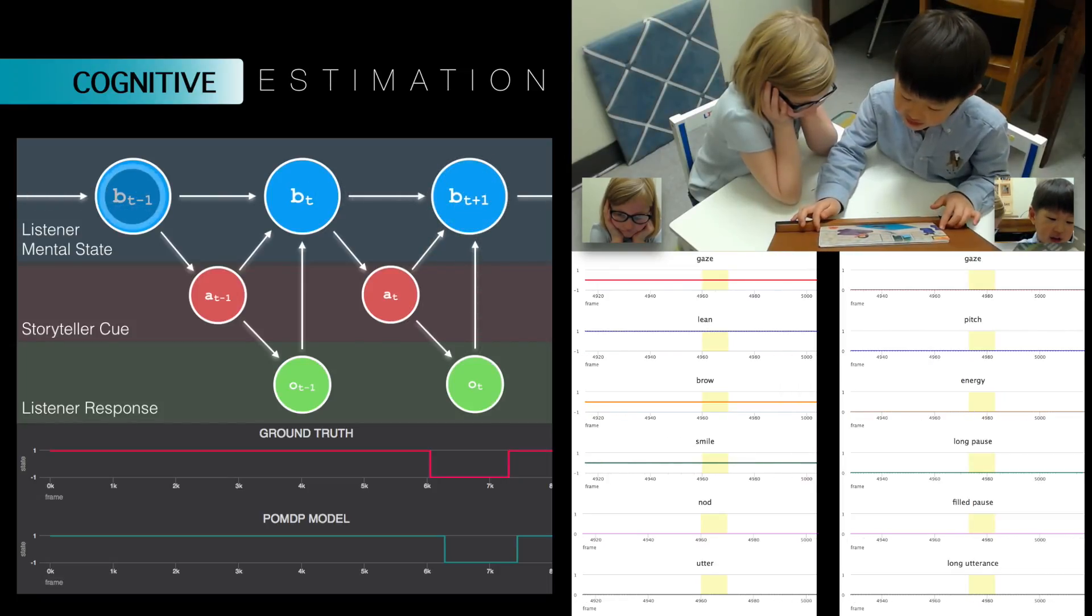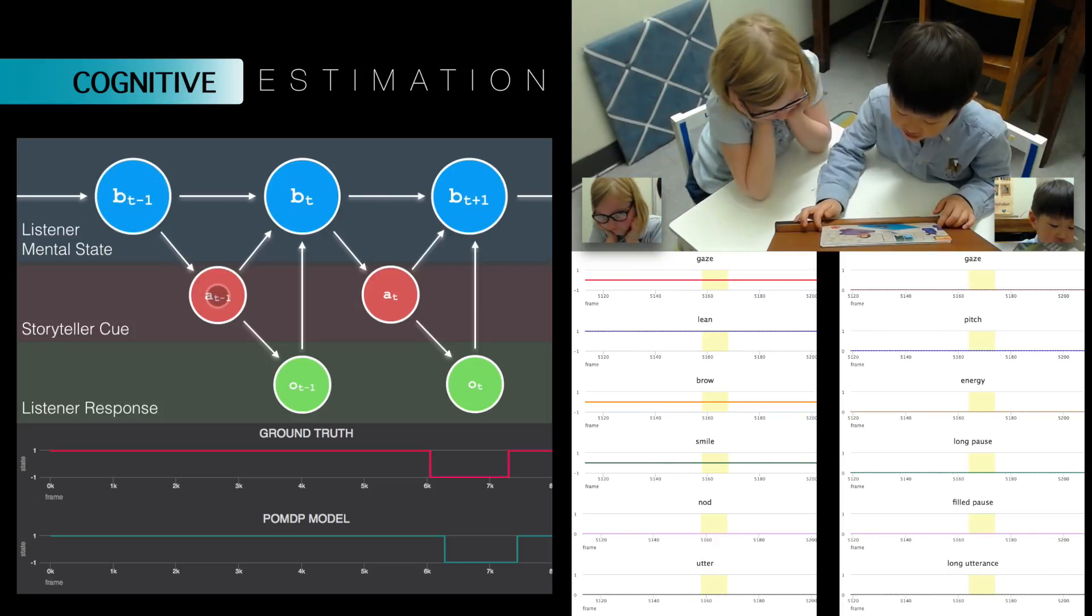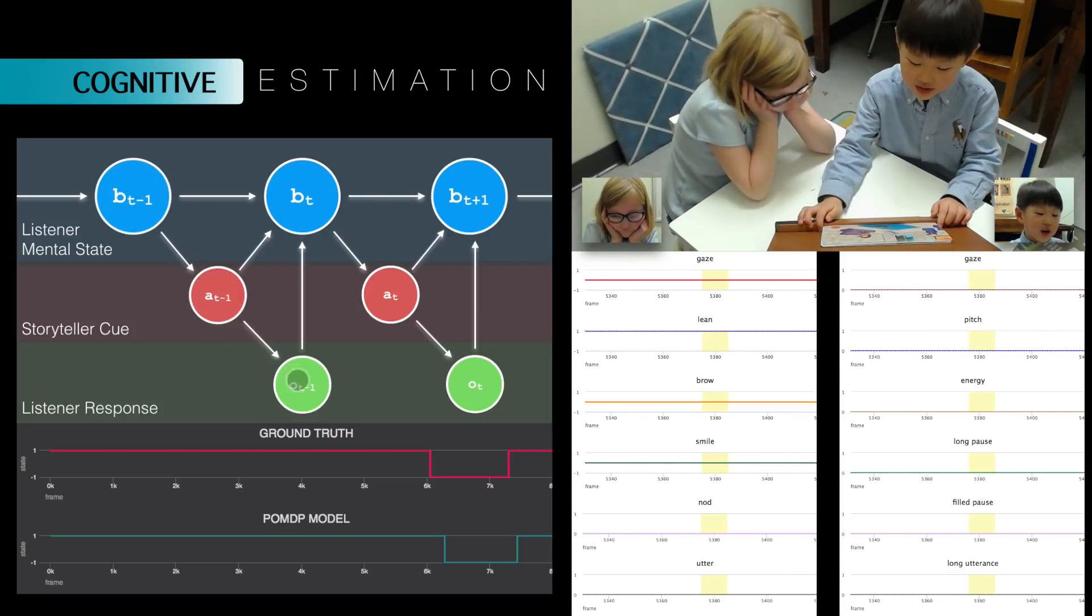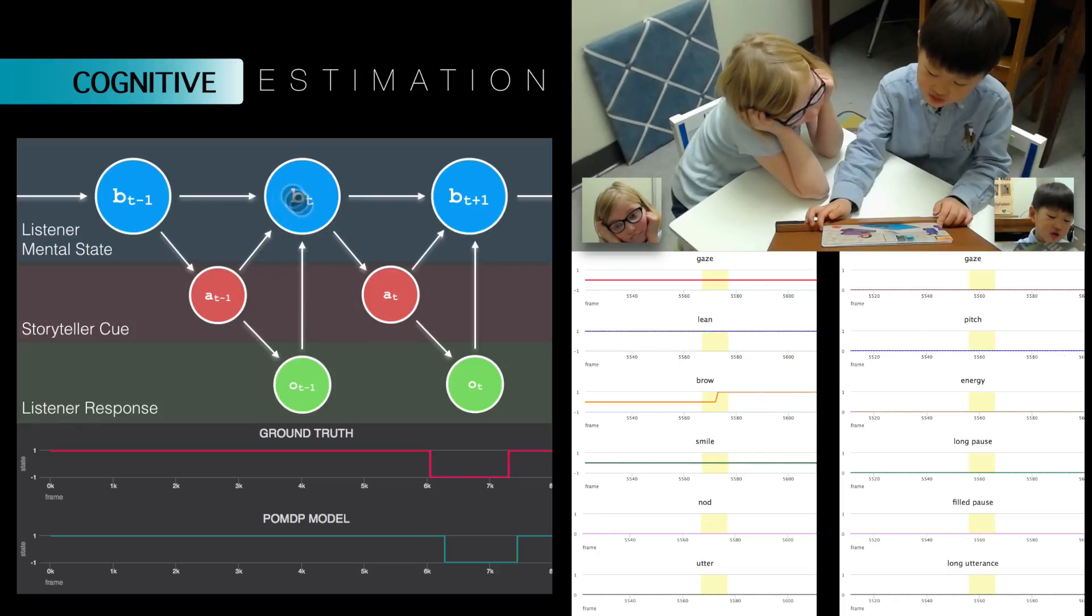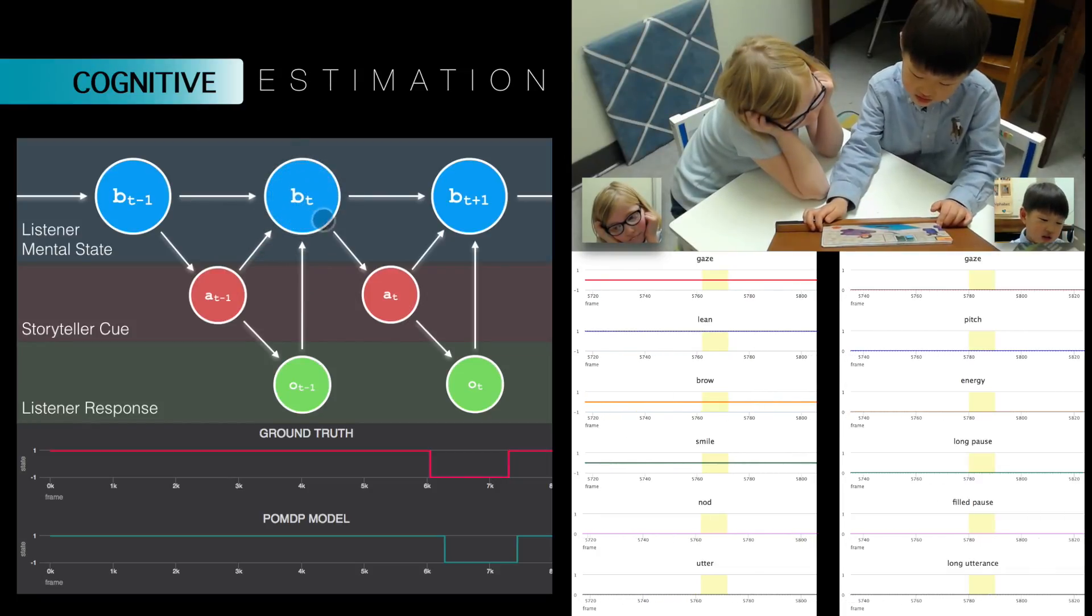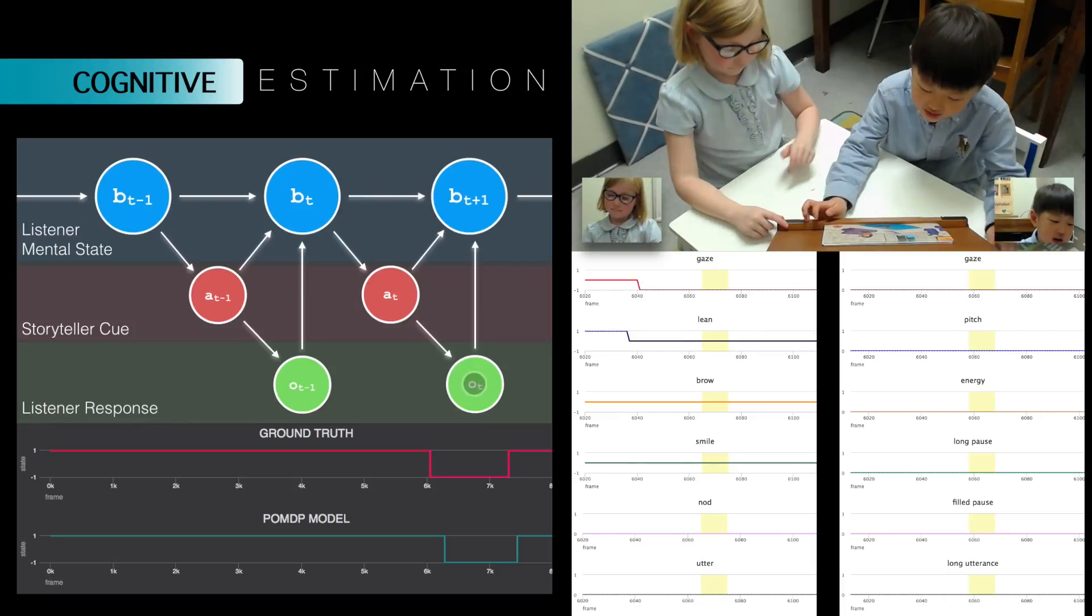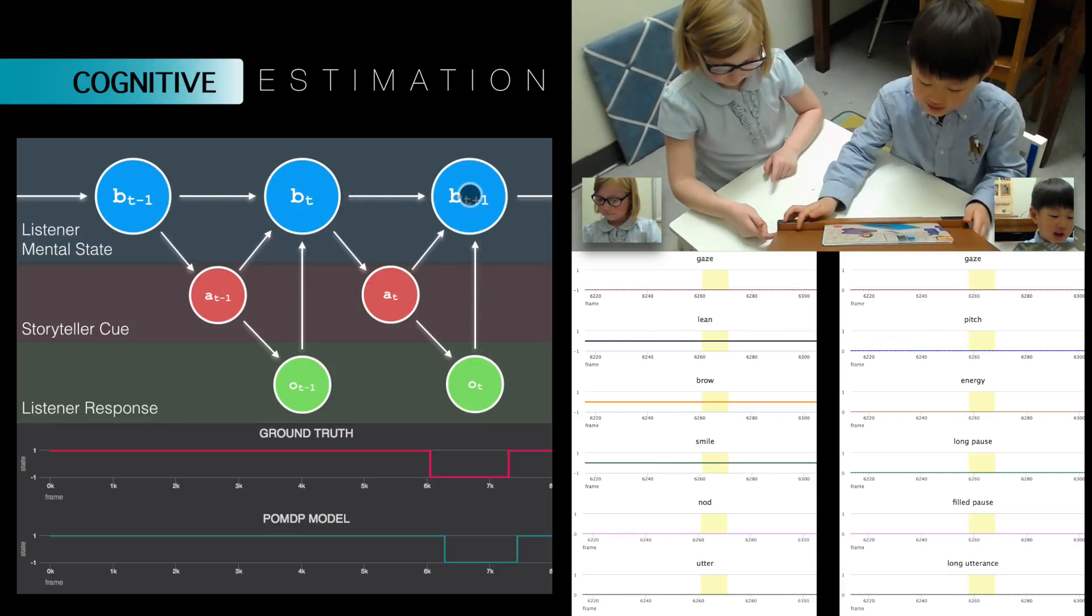And the bird got in a cage, and the bird said to the little girl, Why am I in a cage? I'm not supposed to be in there. And the girl said, So I could keep you safe from the dog and the cat before they eat you.